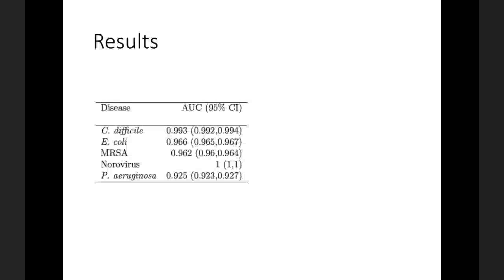In terms of the results, we ran the various cutoffs and see very high area under the curve. For the five different conditions, the area under the curve is between 0.93 and 1. Norovirus is a special case — there were only 22 cases and the standard operating procedure is to send somebody home as soon as they're diagnosed with norovirus, so there wasn't a lot of data there. But these AUC values are actually so high that there's a little bit of cause for worry, so I'll get into some sensitivity analyses.